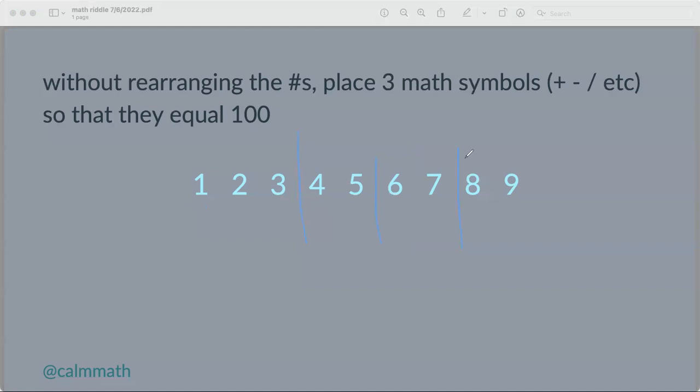If I took away the 89, so let's say this is a minus. If I took away the 89, 123 minus 89 is how much? 34. 34 plus 67 is 101. 101 minus 45. That wouldn't work.